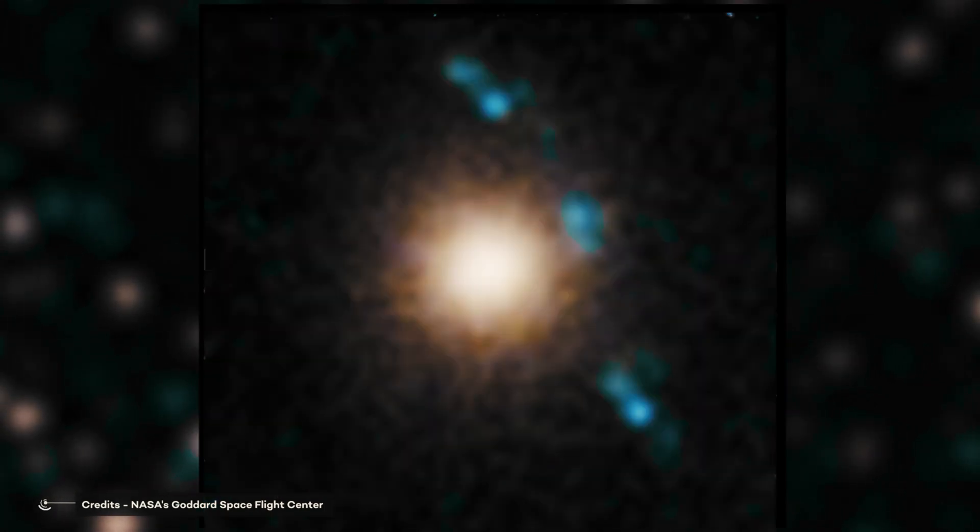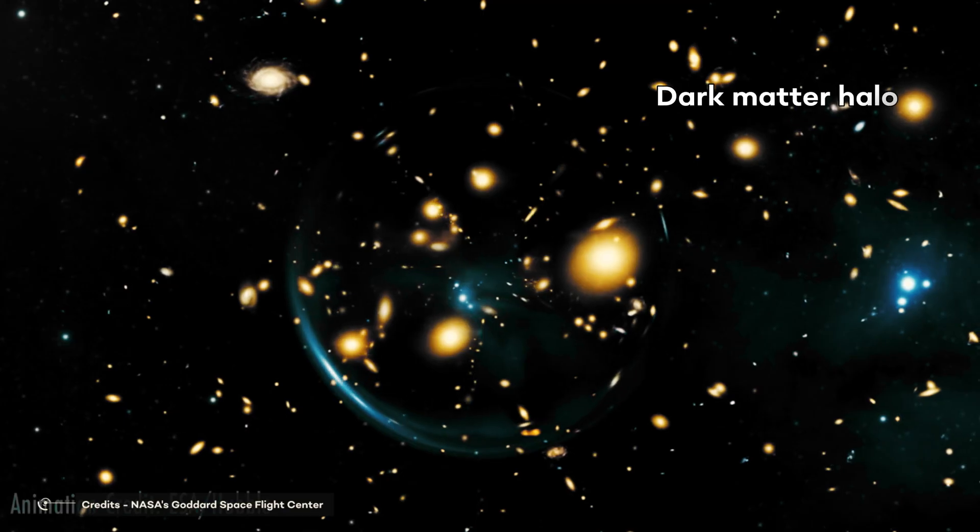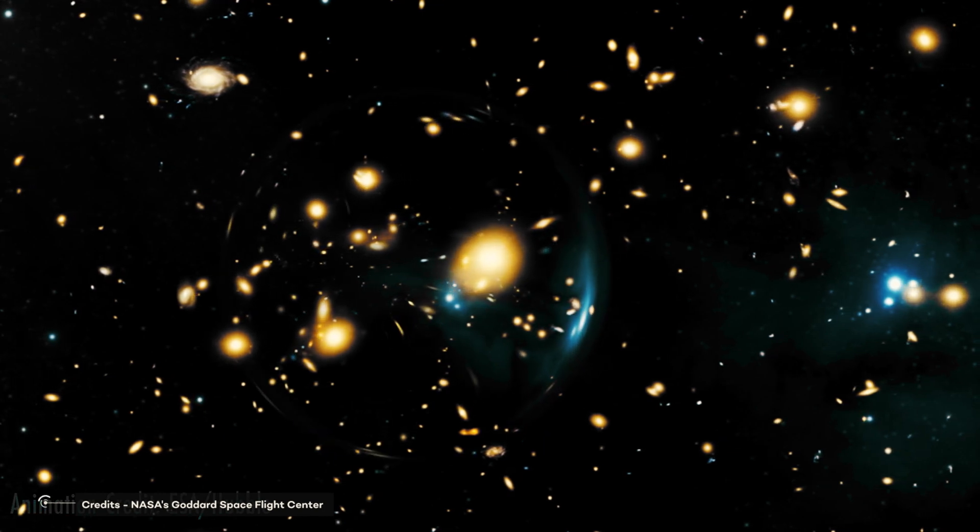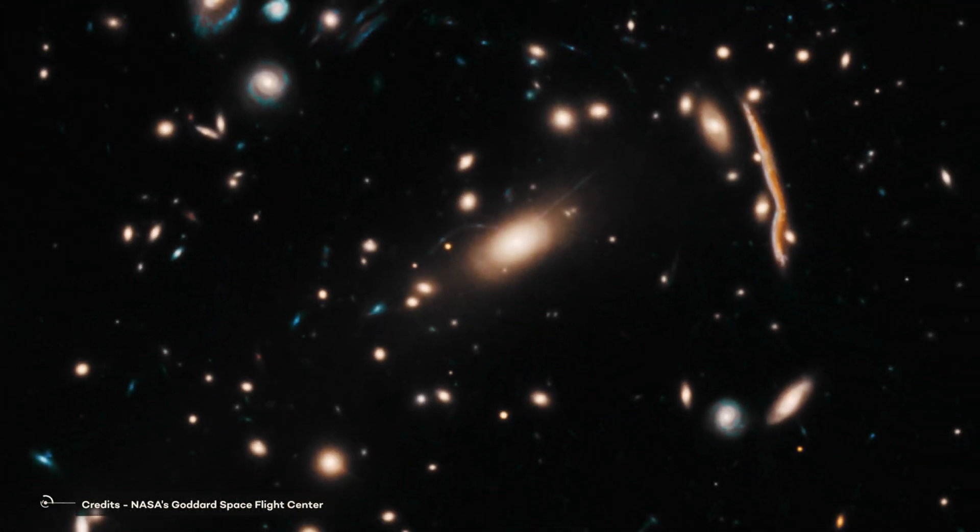And if dark matter is real, that means our Milky Way also has a dark matter halo, and some of that matter should pass through the solar system, Earth, and even you. But how much? Let's take a look.